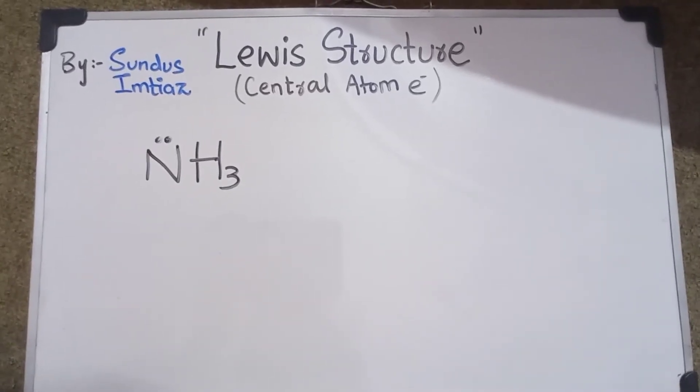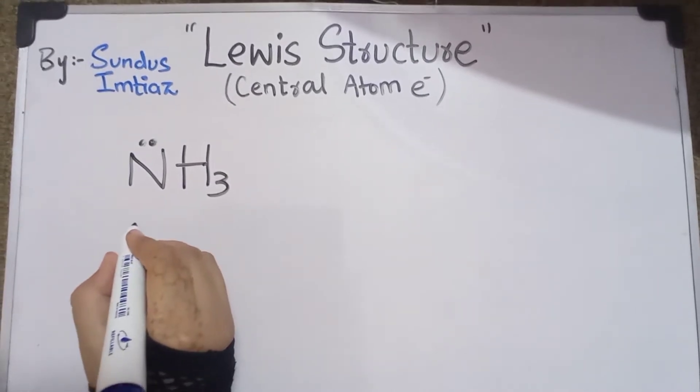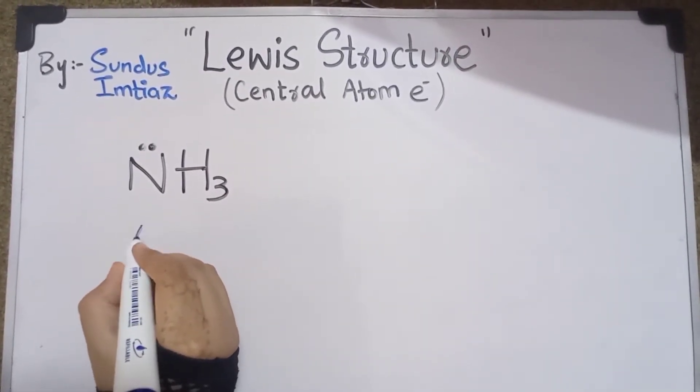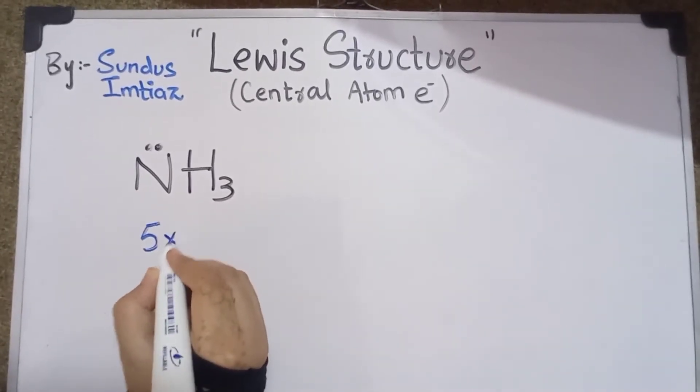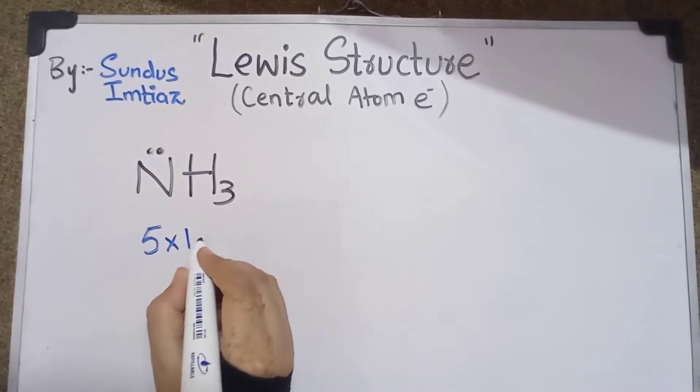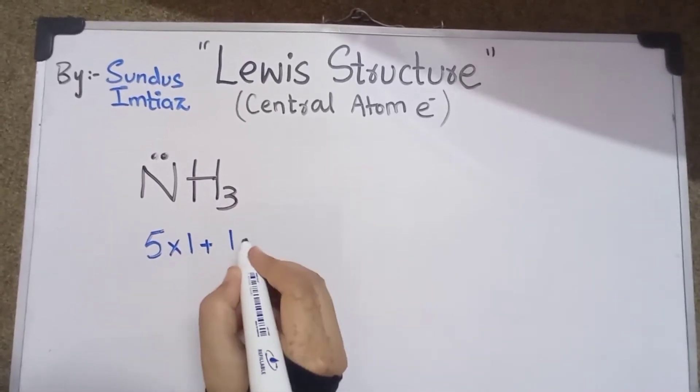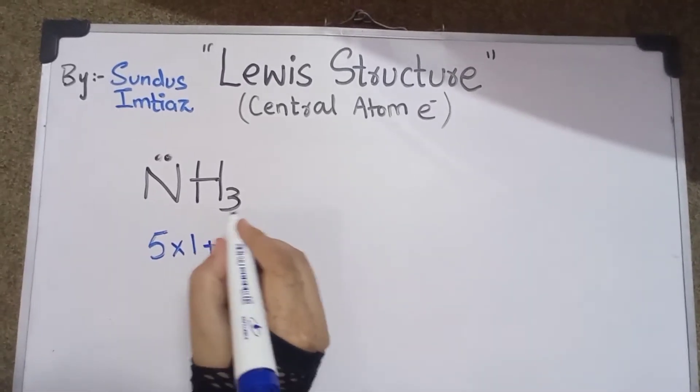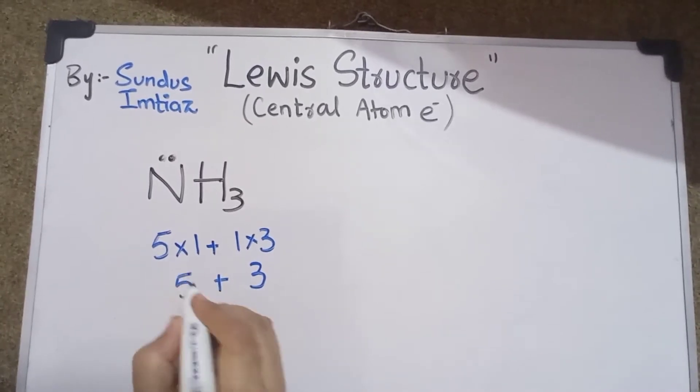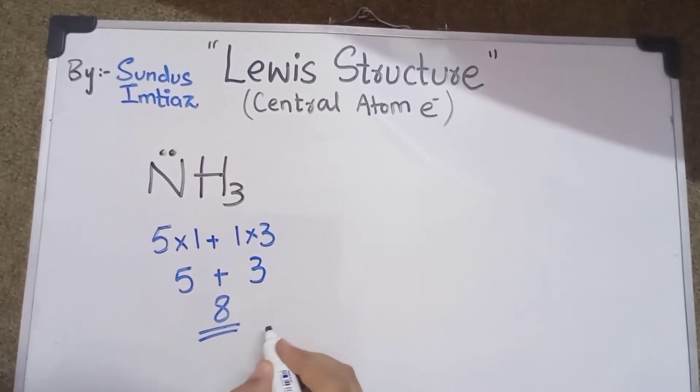Okay, now let's talk about NH3. Nitrogen has 5 valence electrons. The number of atoms attached here is hydrogen, which has 1 valence electron multiplied by 3 hydrogen atoms. So 3 plus 5 equals 8. Eight electrons will be in the outermost shell of nitrogen.